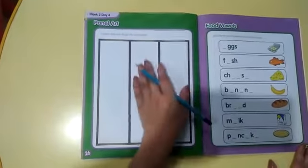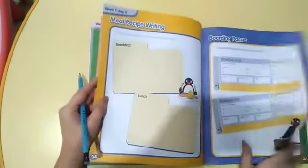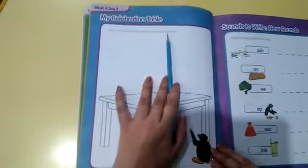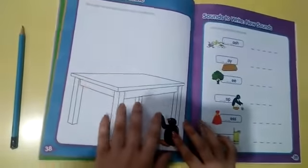Then we have also done page number 38 - My Celebration Tables. Decorate the tables in preparation of your celebration. I am suggesting that we have done the decoration. We have decorated this page according to the birthday.